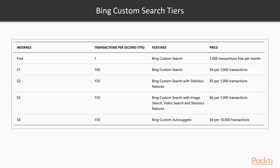If we take a look at the instance types, you will see that the capabilities differ per tier, as you would expect. Also note that S2 also holds all the S1 capabilities and S3 also holds all the S2 and S1 capabilities. To get the full experience, you should also add S4 if you also want custom auto-suggest.